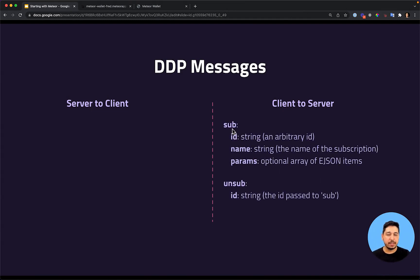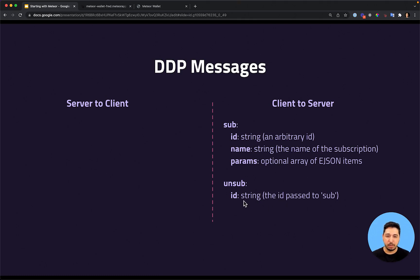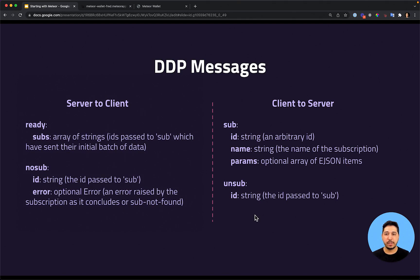Another important message is 'sub'. The client sends this sub message to the server side when it tries to create a subscription. It sends an ID, the name of the subscription, and a few parameters that the subscription might require. It can also send 'unsub' to unsubscribe from any subscription. When it sends those messages, the server might respond with 'ready' or 'nosub' — if ready, it returns an array of strings with the names of the subscriptions; 'nosub' is for the case that the server could not find the subscription.